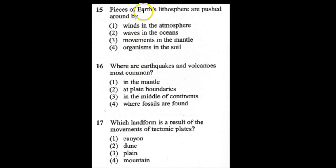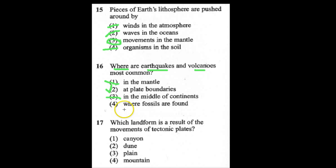Number 15: pieces of Earth's lithosphere are pushed around by winds and atmosphere? No way, not strong enough. Waves in the ocean? Definitely not strong enough. Movements in the mantle? Yes — that's the layer underneath the crust. Organisms in the soil? You think worms could make an earthquake happen? The answer is movements in the mantle. Number 16: where are earthquakes and volcanoes most common? In the mantle? No, that's below the crust. At plate boundaries? Yes. In the middle of the continents? No, most don't have plate boundaries. Where fossils are found? Not necessarily — fossils are found almost everywhere. The answer is at plate boundaries.